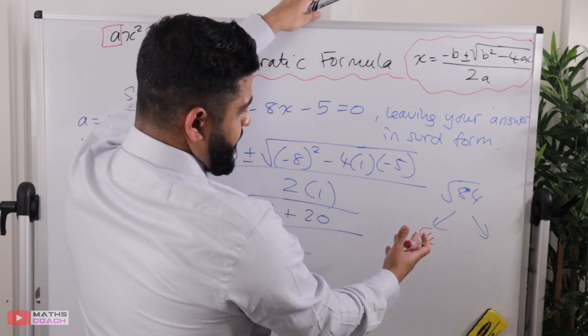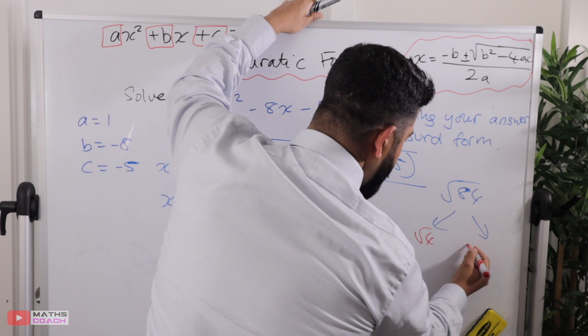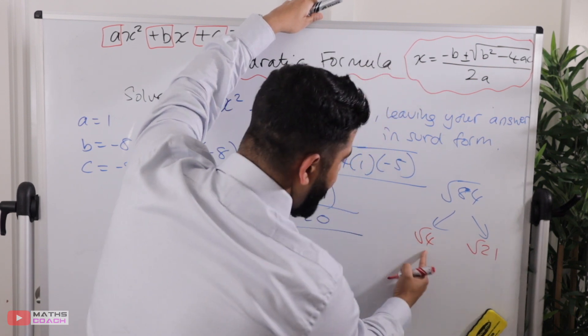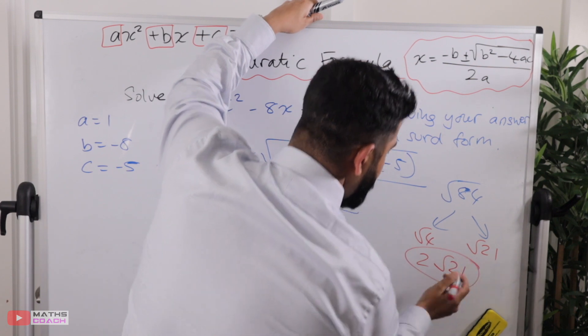I know that 4 goes into 84, so 4 times 21, so root 21 here, and that would be, square root of 4 would be 2, so 2 root 21.